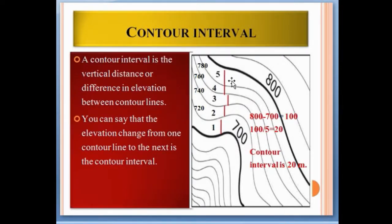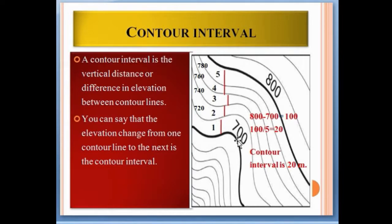Now we read about contour intervals. A contour interval is the vertical distance or difference in elevation between contour lines. You can say that the elevation change from one contour line to the next is the contour interval. So the distance from 700 to 800 is the contour interval — the change of elevation from one contour to another is known as the contour interval.